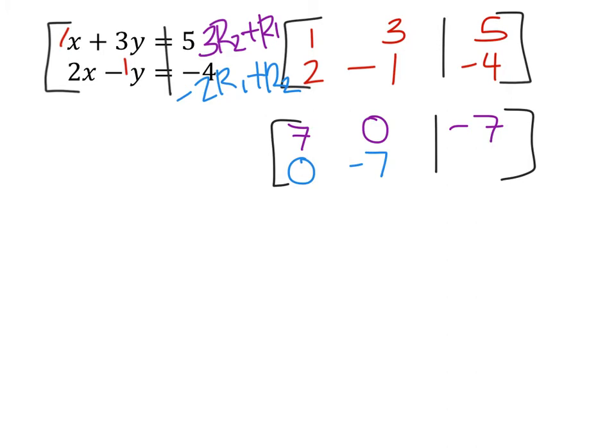And then for the second row, we got negative 2 times the 5 plus the negative 4, and that would give us a negative 14.